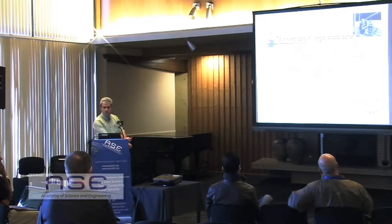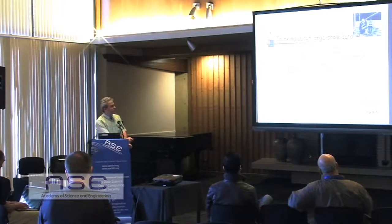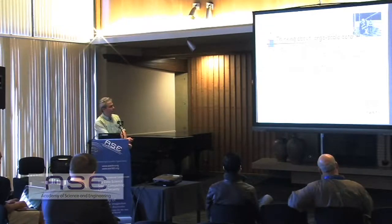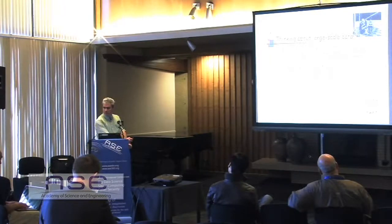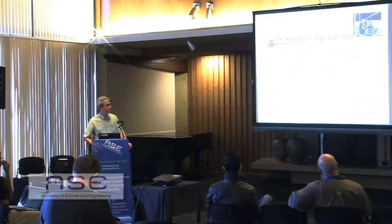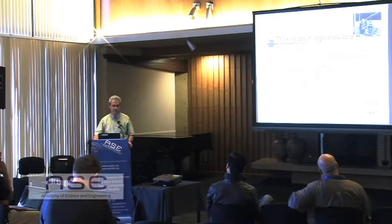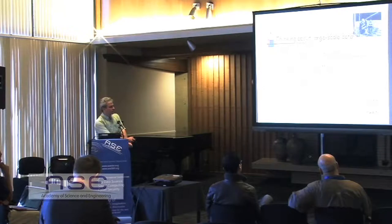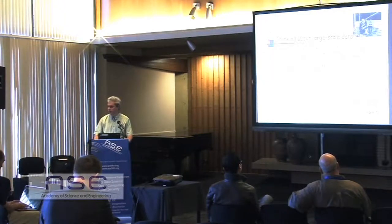The way to think about large data in many applications is that it's the modern version of the telescope or microscope — you basically see things you couldn't see before. That could be movement of people, clicks at an e-commerce site, fine-scale temperature measurements from sensors, or looking at the other side of the universe. Algorithmically, easy things become hard and hard things become easy at large scale. Correlations, which are more subtle structures, are very easy at small scale but become very difficult at large scale.